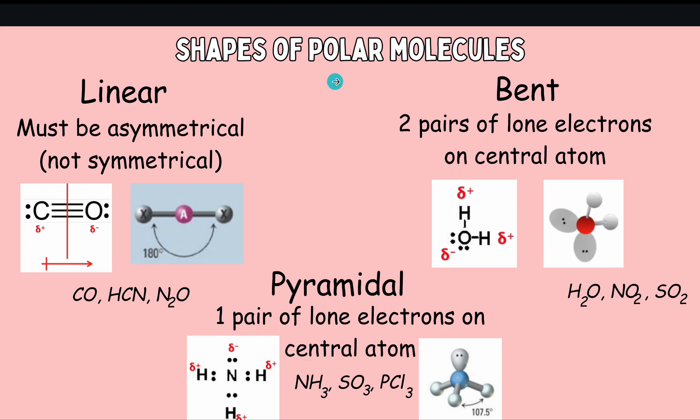Here are a few shapes. Polar molecules tend to be one of these three shapes, and they are linear, bent, and pyramidal. A linear molecule is going to be what it sounds like. It's going to be in a line straight across with this 180 degree bond angle.